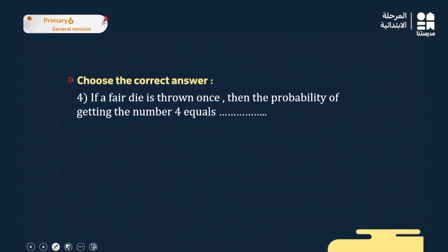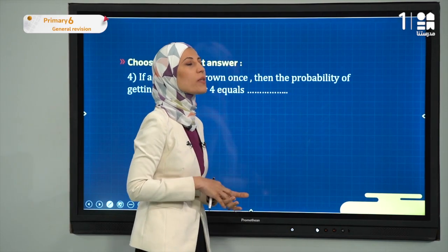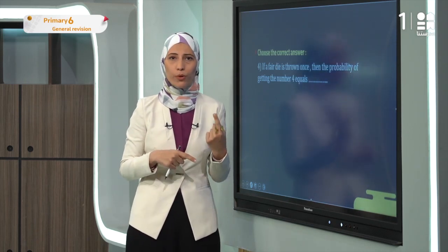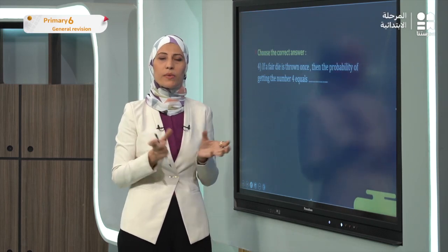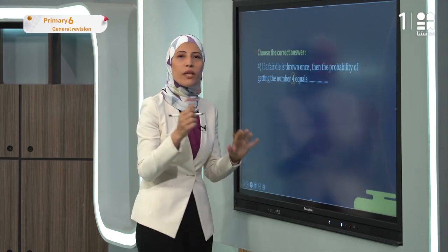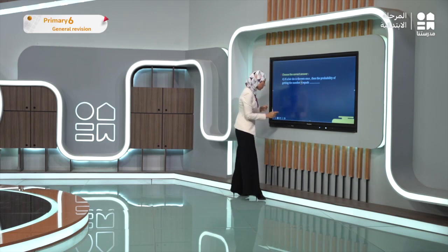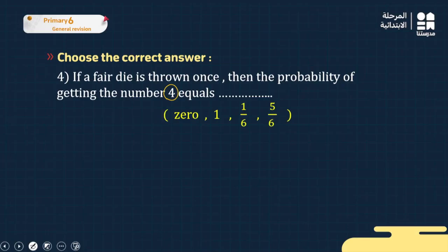If a fair die is thrown once, what is the probability of getting the number 4? A die has six faces, each showing one number from 1 to 6. Only one face shows the number 4. So the probability is 1 out of 6 — that's the favourable outcome divided by the total outcomes.